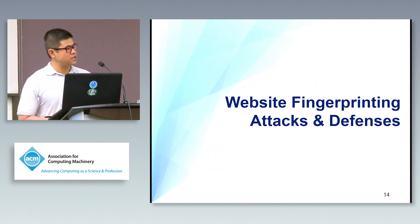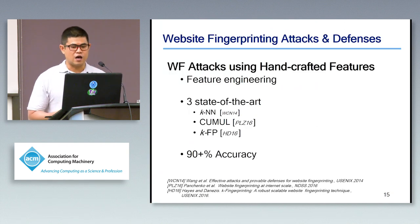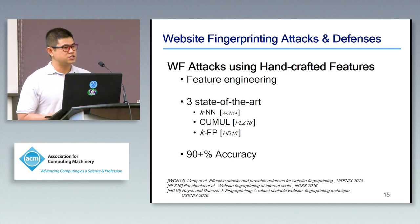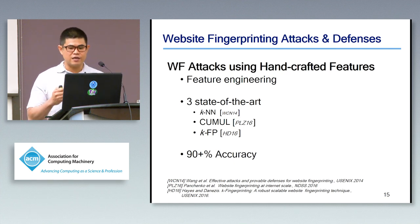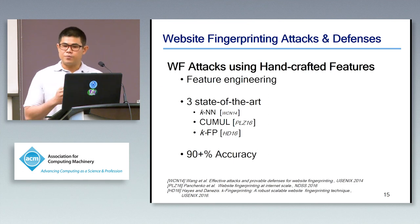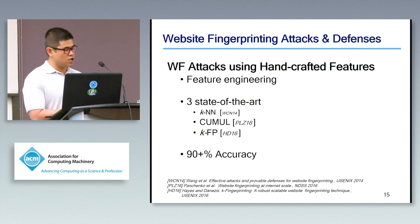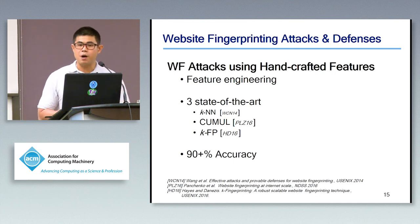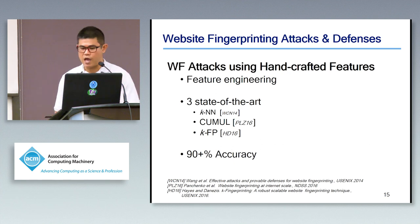Now let me talk about previous work in website fingerprinting attacks and defenses. Starting with attacks using handcrafted features — where the attacker performs feature engineering to select effective features for training the classifier — previous works including CUMUL by Wang et al., k-NN by Panchenko et al., and k-fingerprinting by Hayes and Danezis can effectively achieve over 90% accuracy.